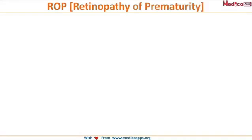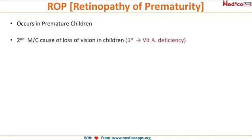Retinopathy of prematurity, as the name suggests, occurs in premature children. It is the second most common cause of loss of vision in children, only preceded by vitamin A deficiency. So the first most common cause for loss of vision in children is vitamin A deficiency, and the second most common is retinopathy of prematurity.